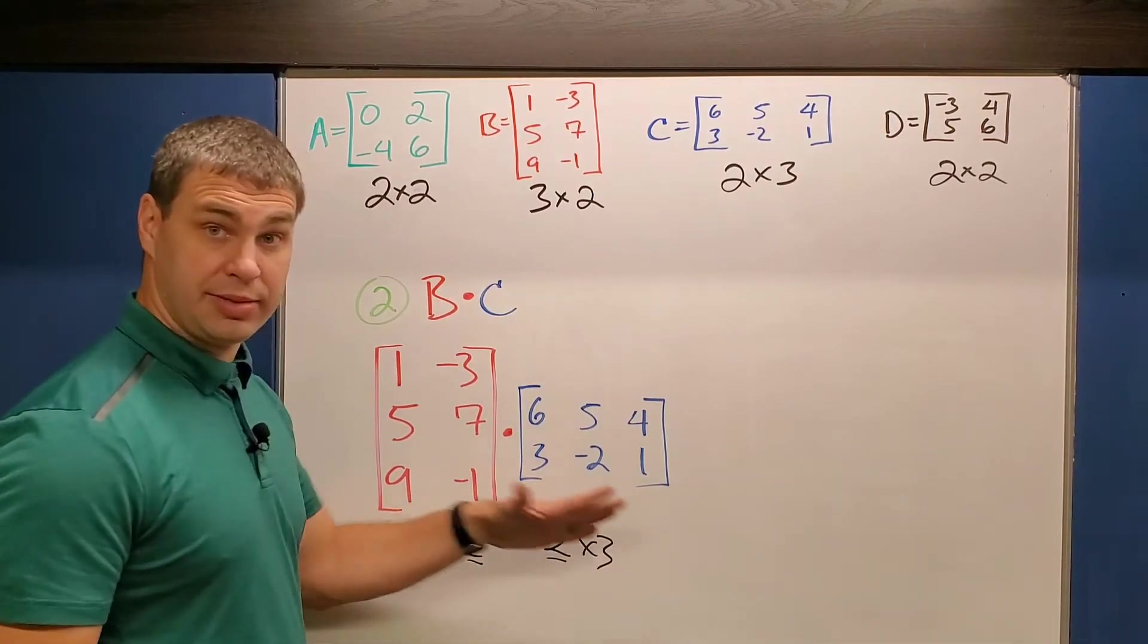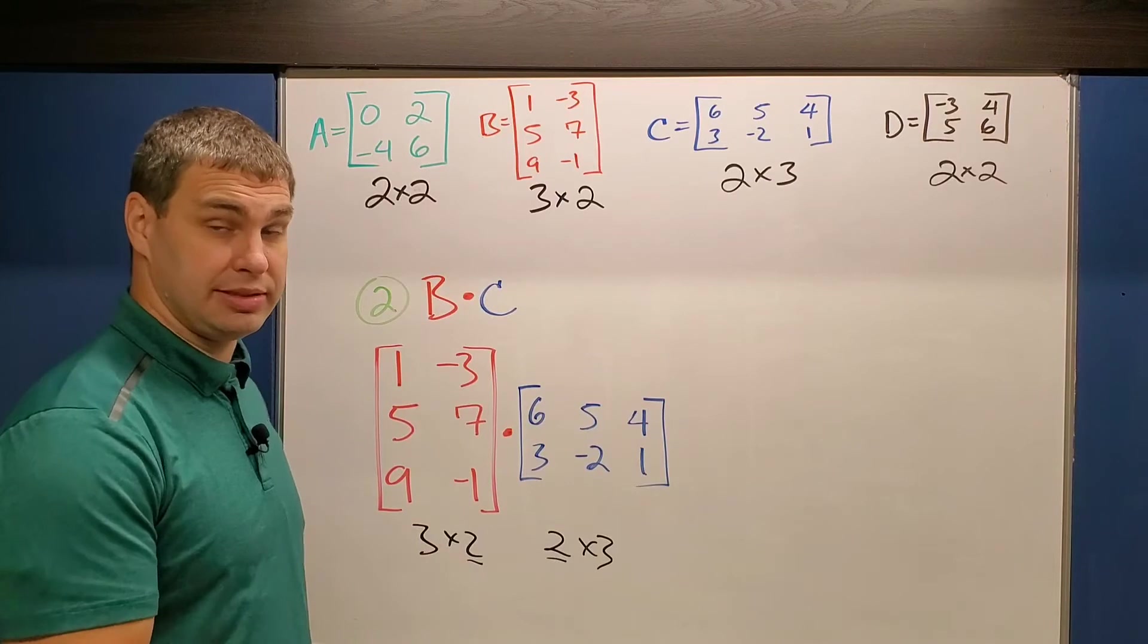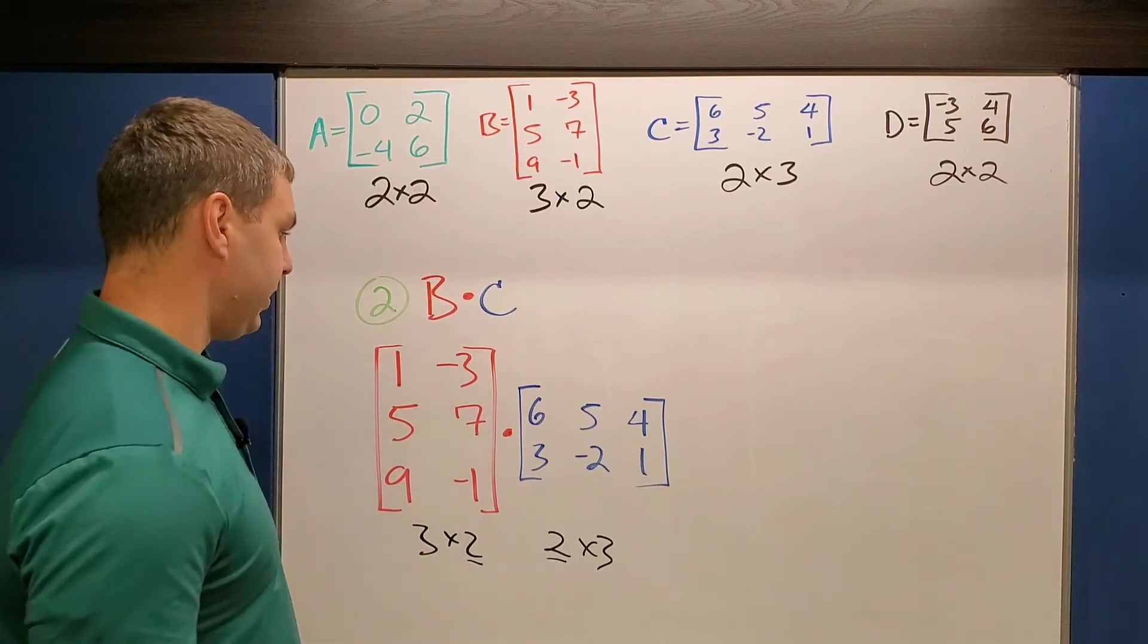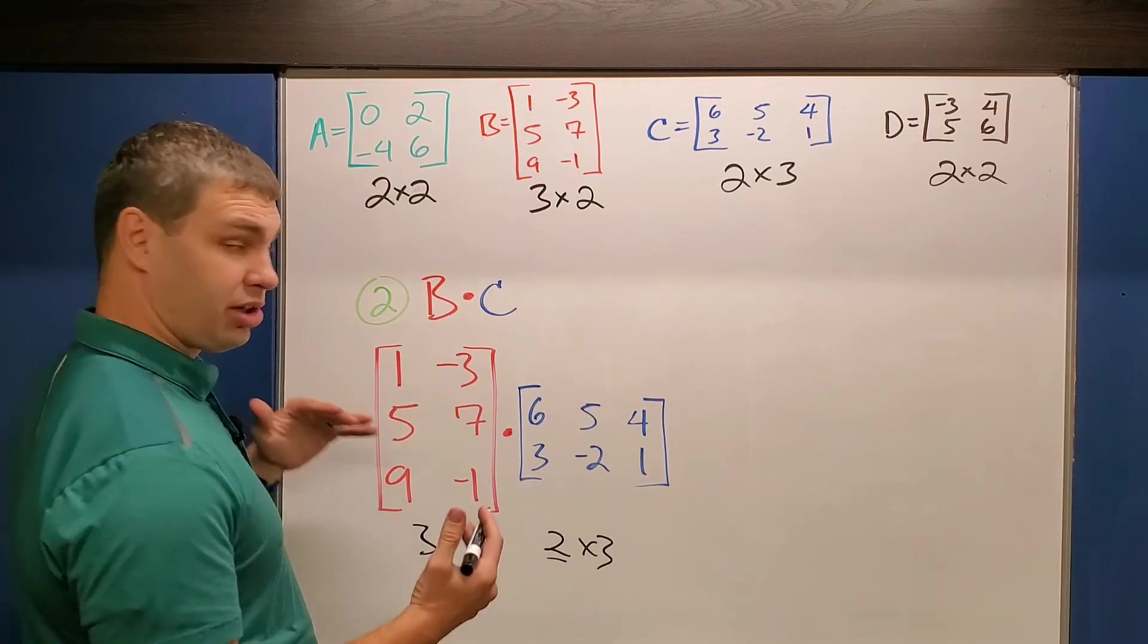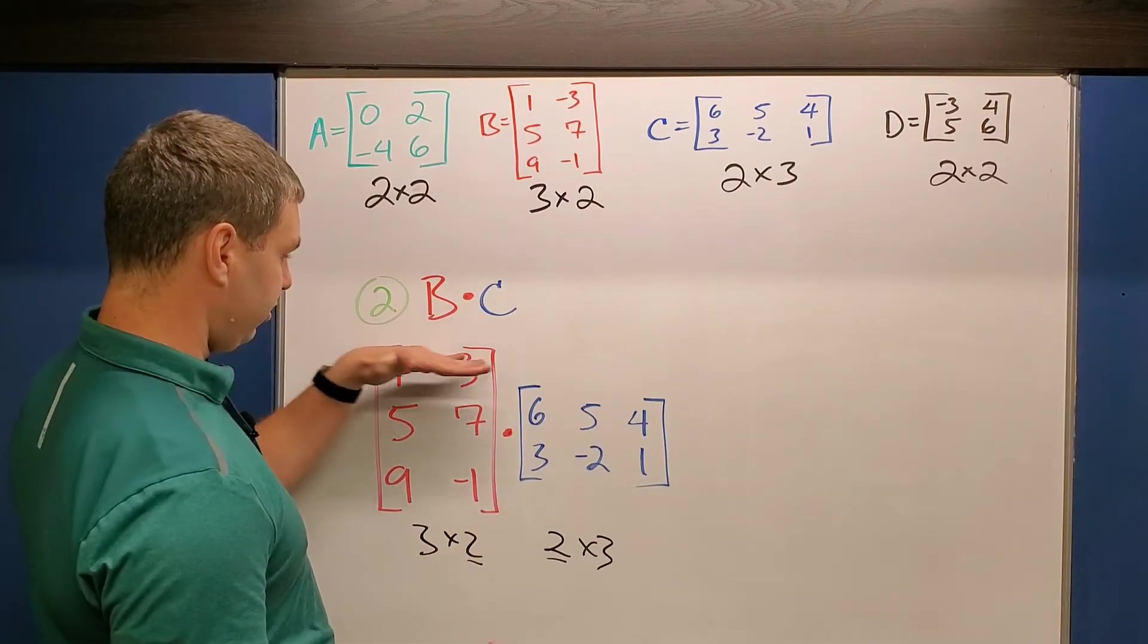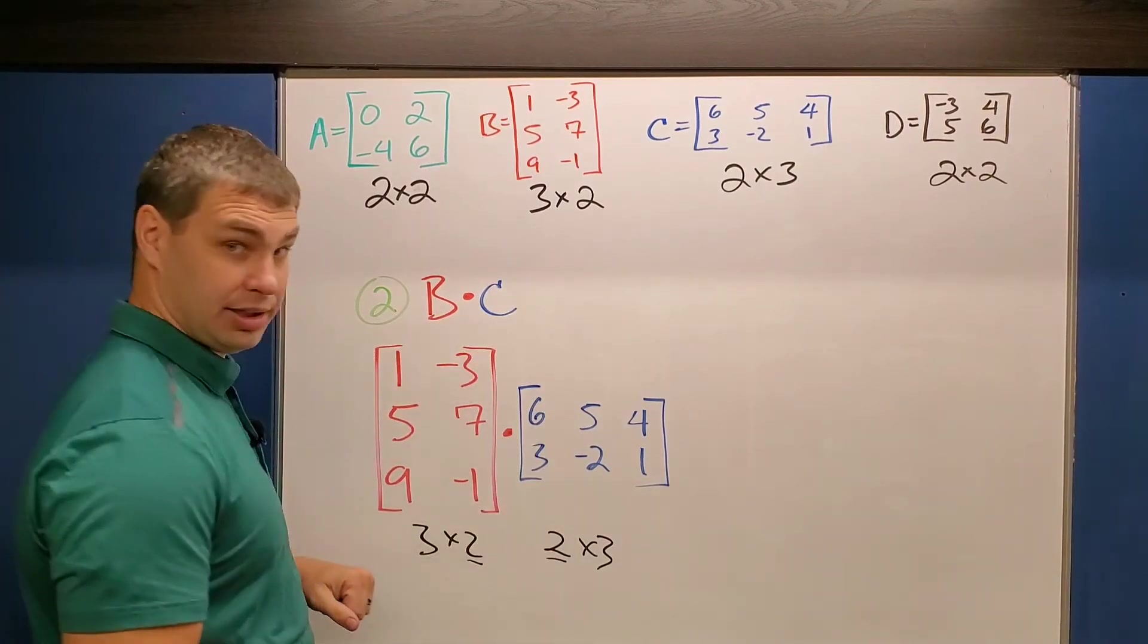So we are able to multiply these together because our middle numbers match. And then our answer is actually going to be a 3×3. So this one could take us a little bit of time, but I think we can do it. So the same rules apply here.